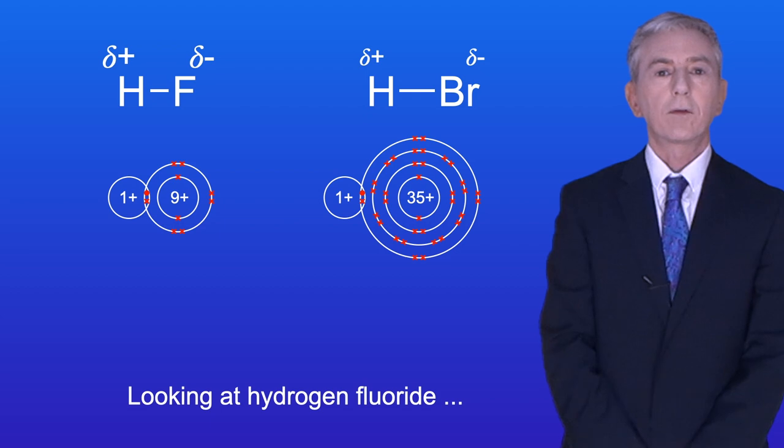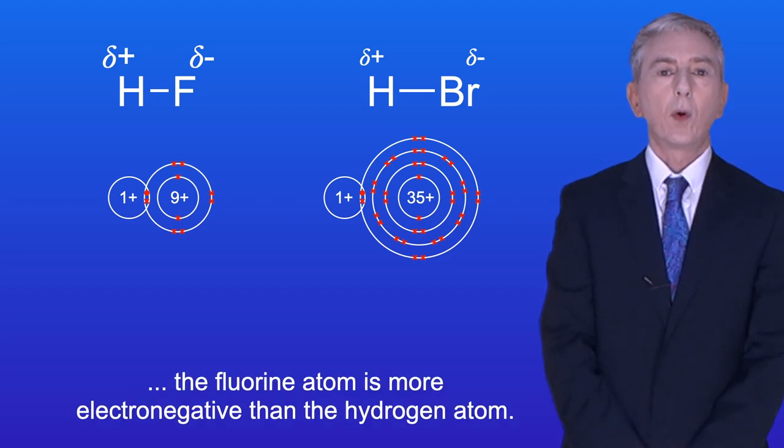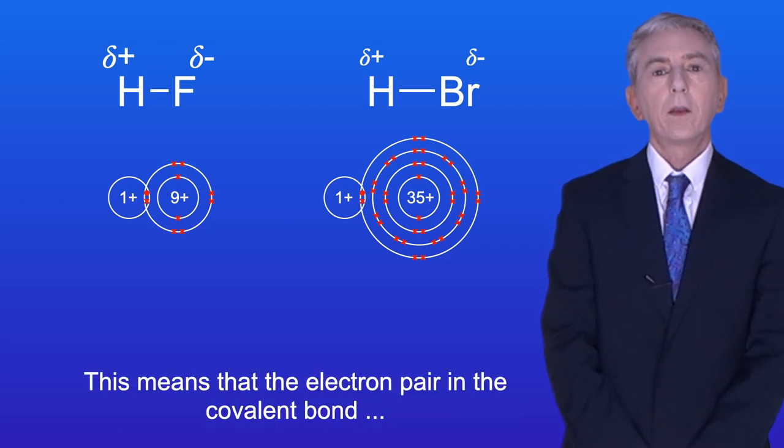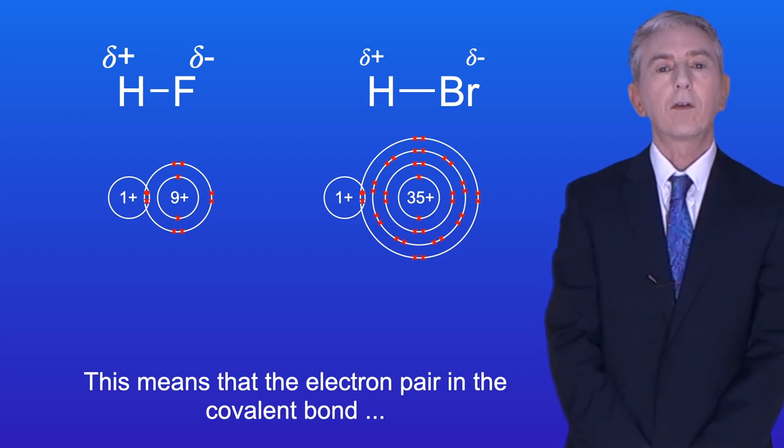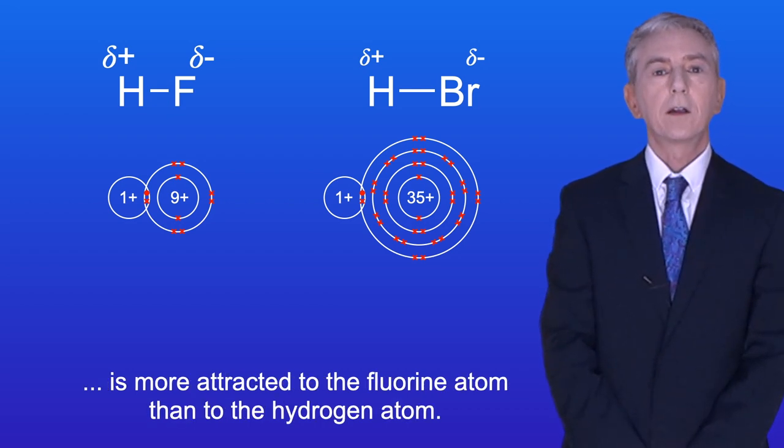Looking at hydrogen fluoride, the fluorine atom is more electronegative than the hydrogen atom. This means that the electron pair in the covalent bond is more attracted to the fluorine atom than to the hydrogen atom.